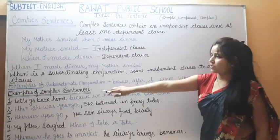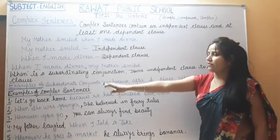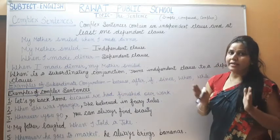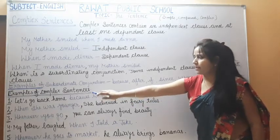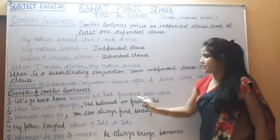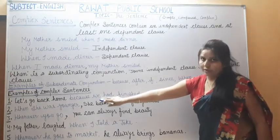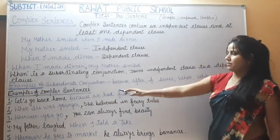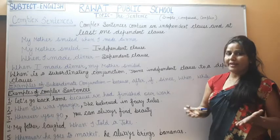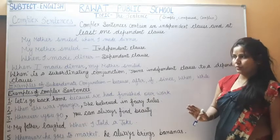Let's see the examples of complex sentences. First: 'Let's go back home because we had finished our work.' The independent clause is 'let's go back home' and the dependent clause is 'because we had finished our work.' Since the independent clause is written first, no comma is needed before the dependent clause.